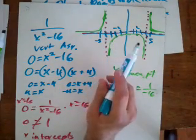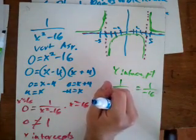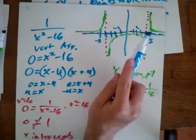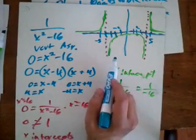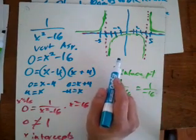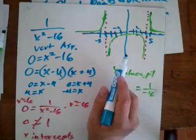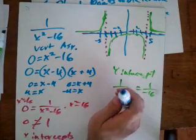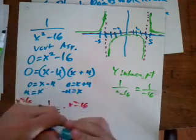The next video will cover oblique asymptotes — cases where the horizontal asymptote is no longer horizontal but oblique. That happens when we do polynomial division and get a line, specifically when the degree of the numerator is greater than the degree of the denominator. We'll do one more graphing video on that.